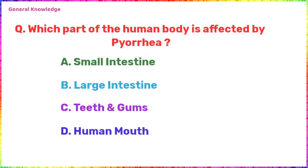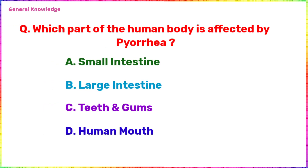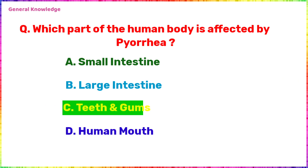Which part of the human body is affected by the next disease? The correct answer is option C, teeth and gums.